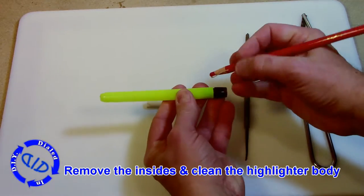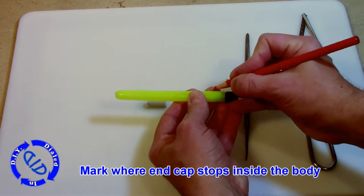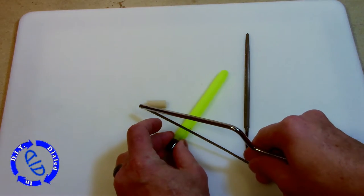So to get started, remove the inside and clean out that highlighter so you don't have any gunk left behind. Then I took the end cap, stuck it back in, and marked the spot on the body where the end cap stops.